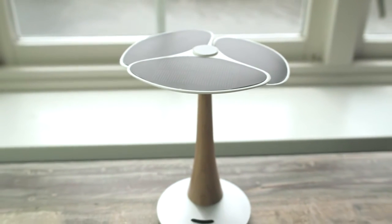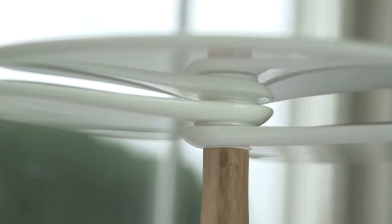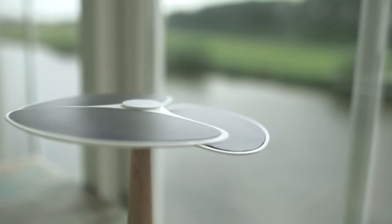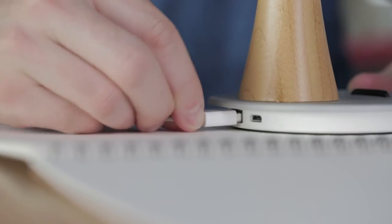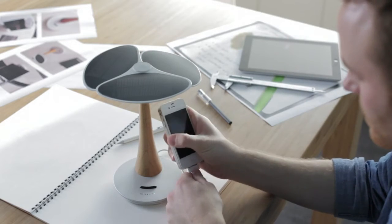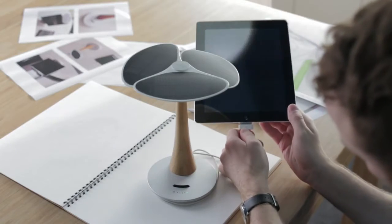This is the Ginkgo Solar Tree. The Ginkgo Solar Tree is a completely independent source of power, relying only on the sun. It can fully charge your phone within two hours and can also provide energy to your tablet.